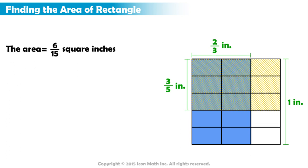We can check our answer by plugging our length and width into the formula. The area equals length times width. The length is 2 thirds, and the width is 3 fifths. So, here we find the product of our numerators. 2 times 3 is 6. And the product of our denominators, 3 times 5 is 15. So, we have 6 fifteenths square inches again.